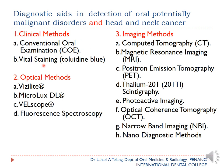Other clinical methods include vital staining, optical methods like ViziLite, MicroLux, VELscope, and fluorescence stereoscopy. Imaging methods — useful when cancer spread is suspected — include computed tomography, MRI, positron emission tomography, scintigraphy, photoactive imaging, optical coherence tomography, narrowband imaging, and nanodiagnostics.